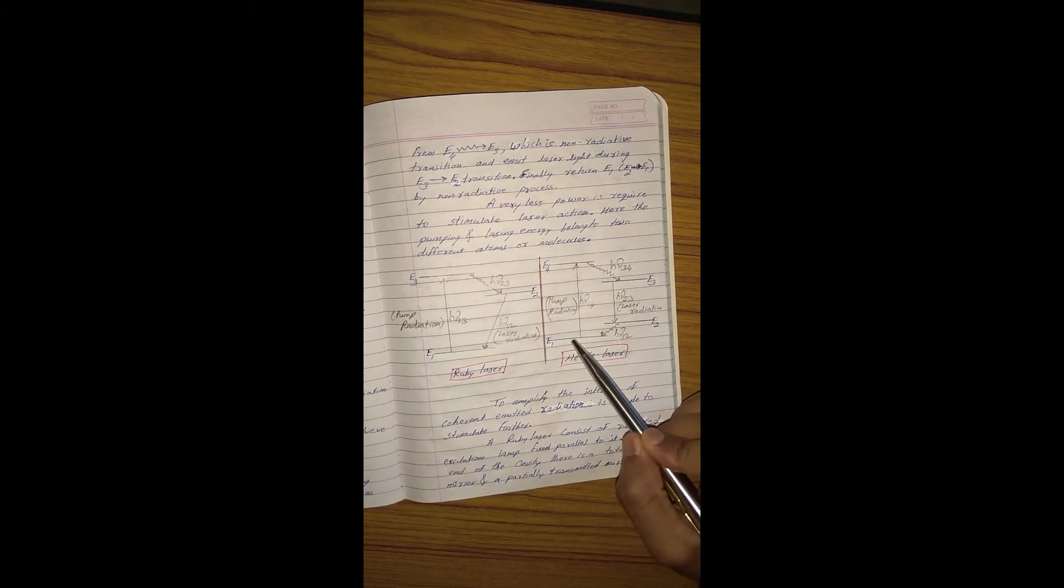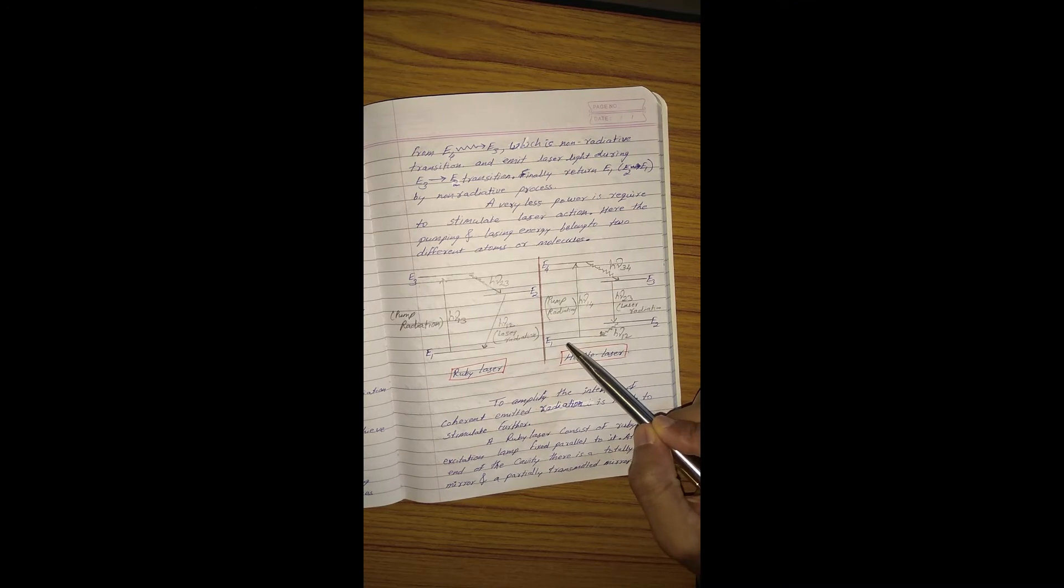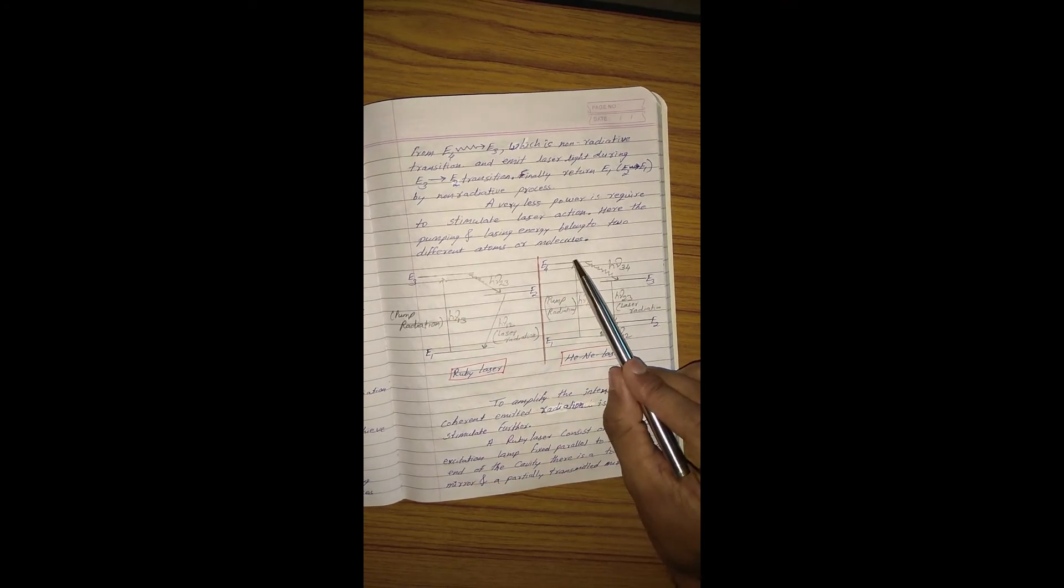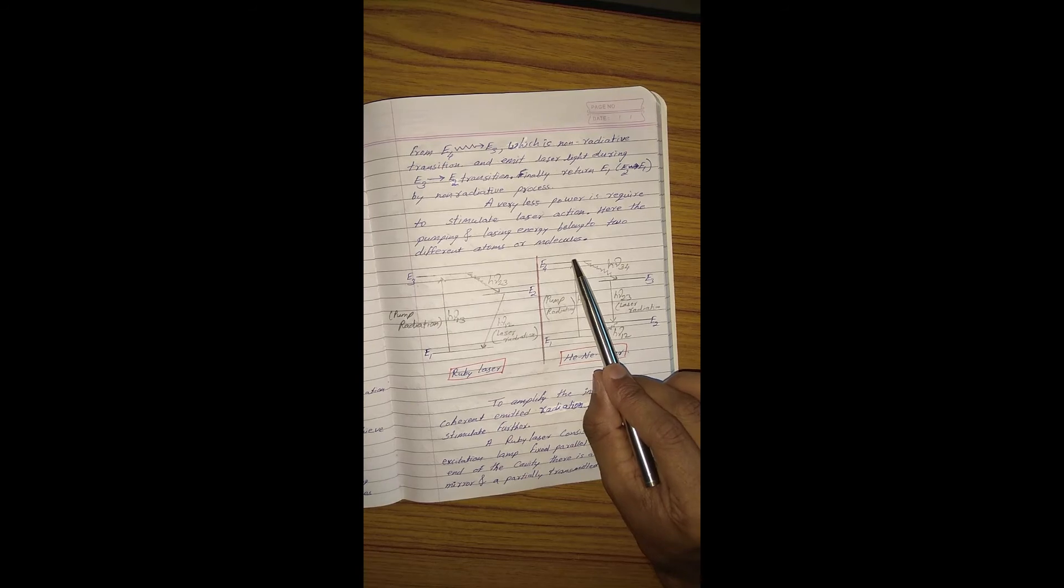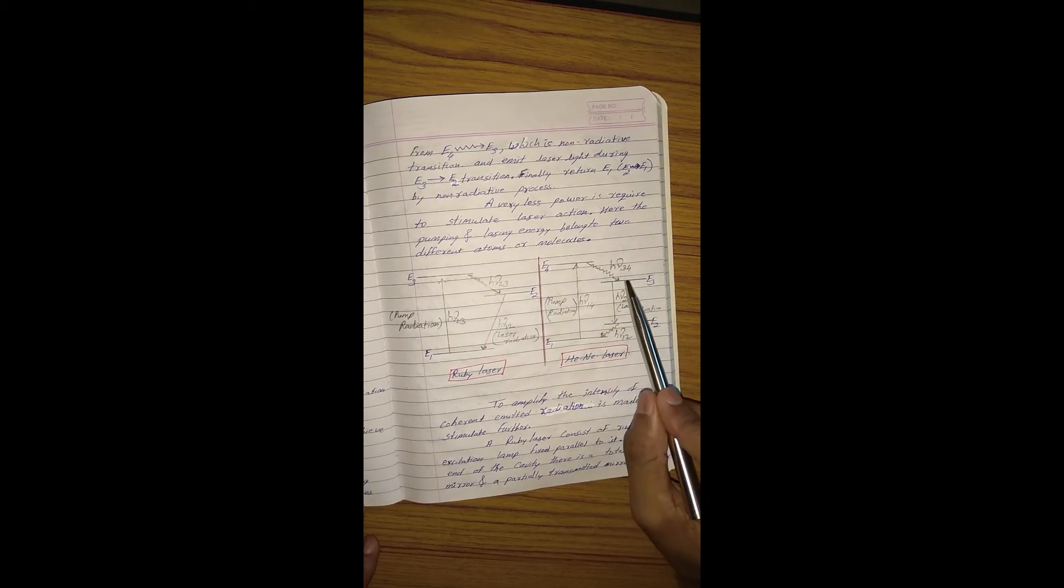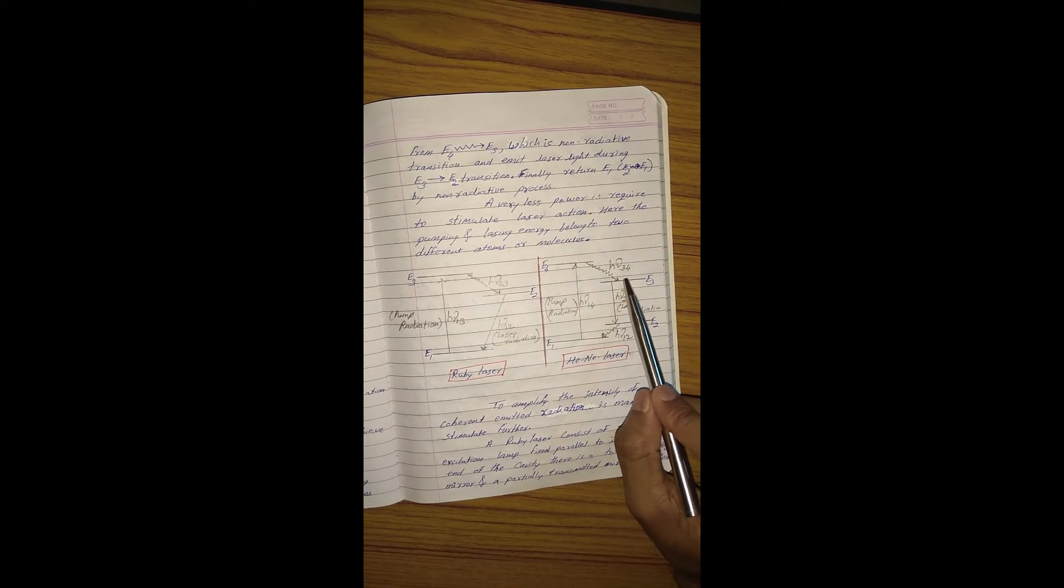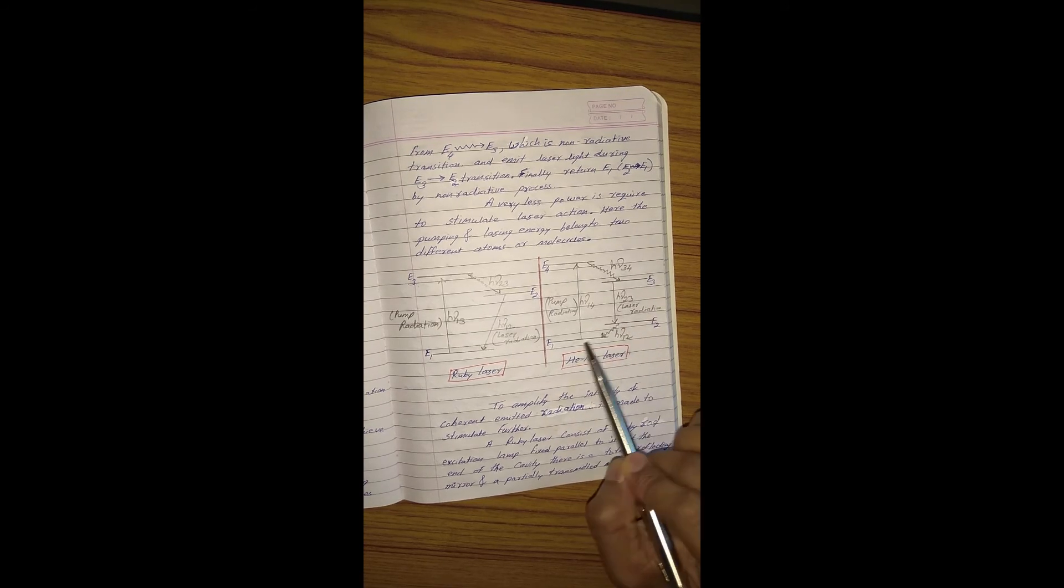Initially, light of frequency ν₁₄, the energy gap between E1 to E4, is supplied to the system. After absorbing the energy, the absorbing species will excite from E1 to E4. E4 is unstable, so the atoms or molecules or ions will relax from E4 to E3, which is again a non-radiative process. Then it emits laser light during the transition from E3 to E2. Finally, it returns to ground state with a non-radiative process.